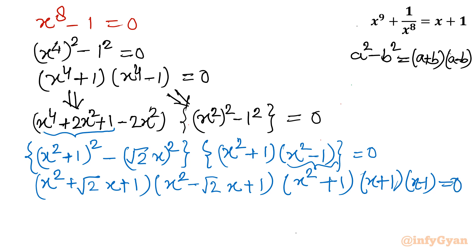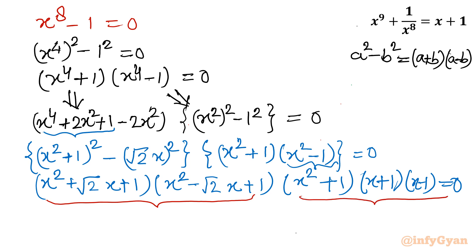Now 8 solutions are visible: 2 from each of the first two quadratic brackets, 2 from the third bracket, and 1 each from the last two linear factors — 8 solutions overall. From the last two linear factors, x = ±1.